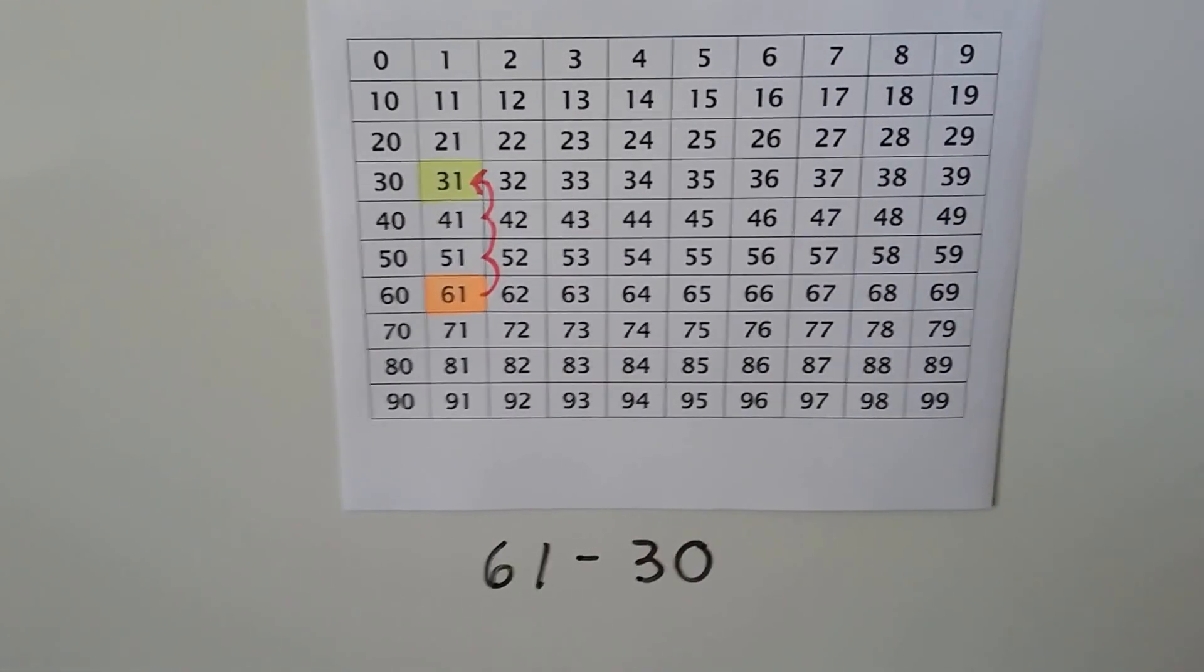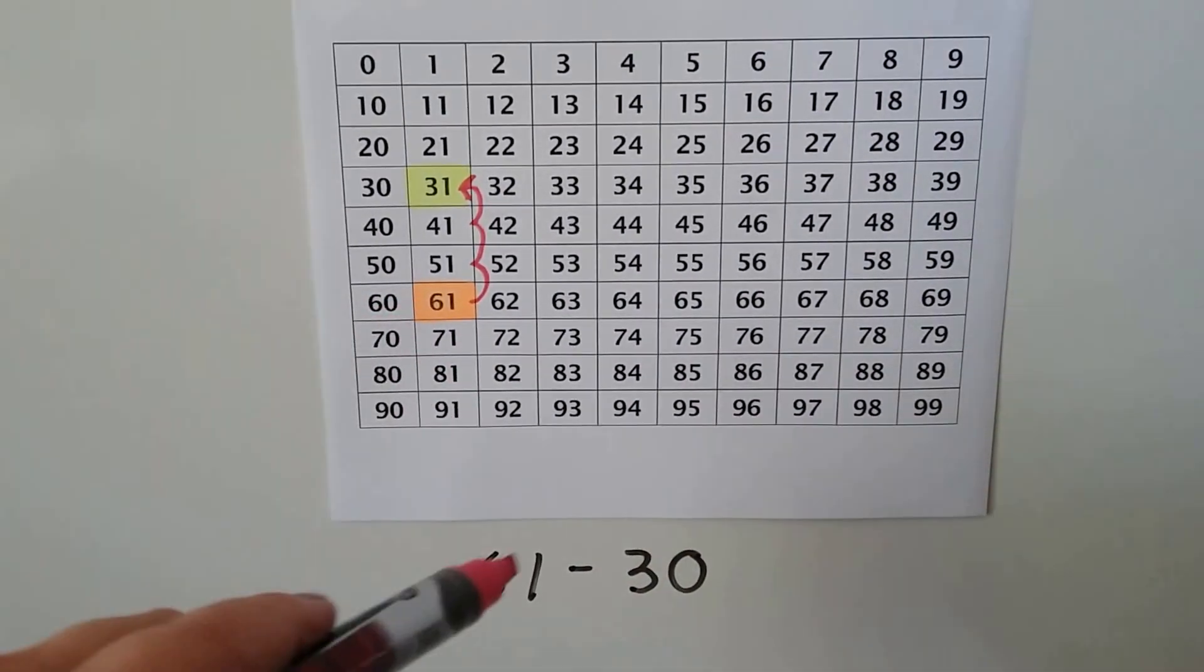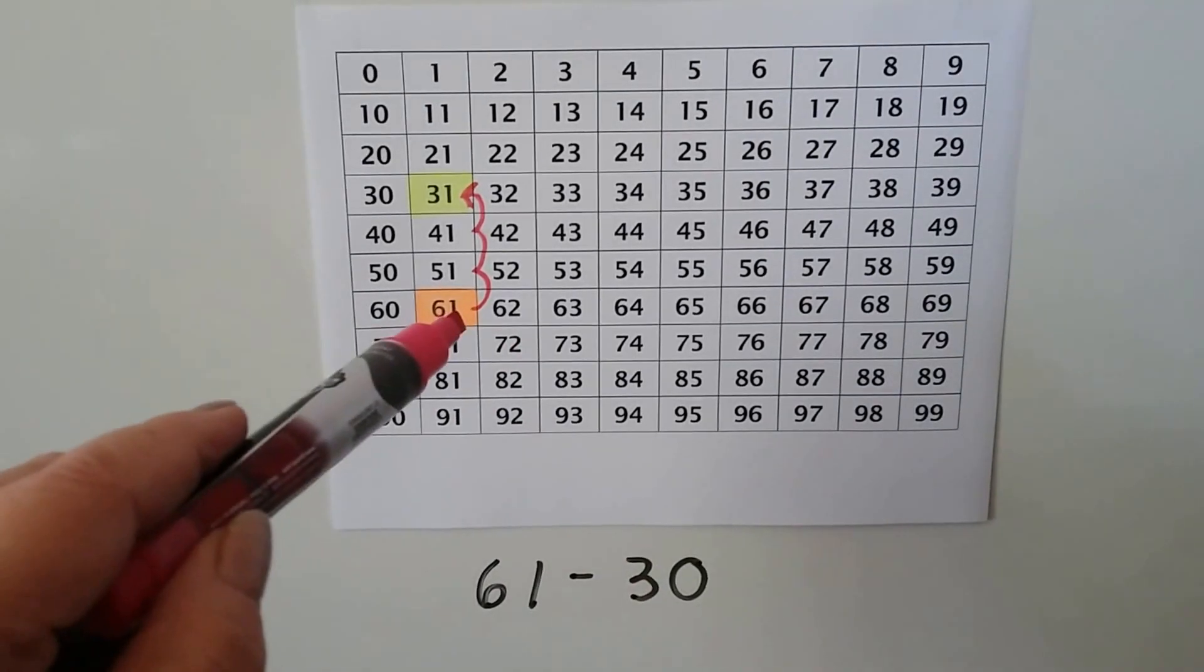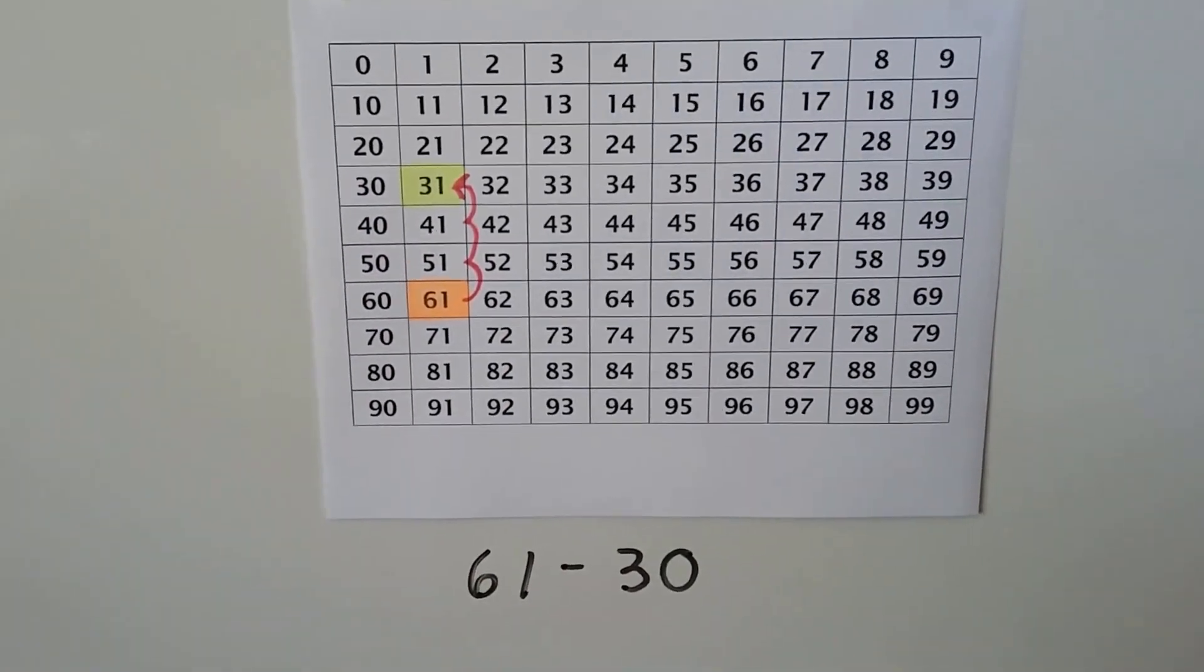We have 61 minus 30. We start at the 61, and we're gonna hop back three tens. So that's three rows: 1, 2, 3, and that brings us to 31.